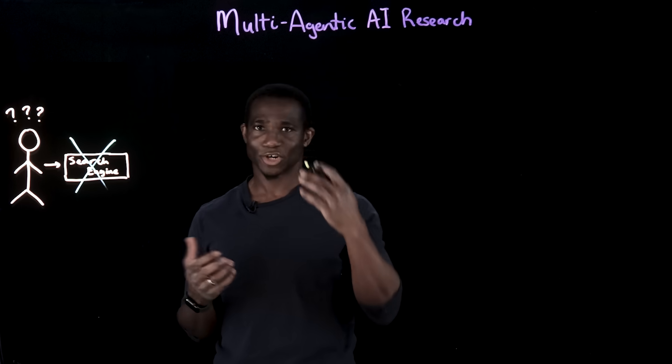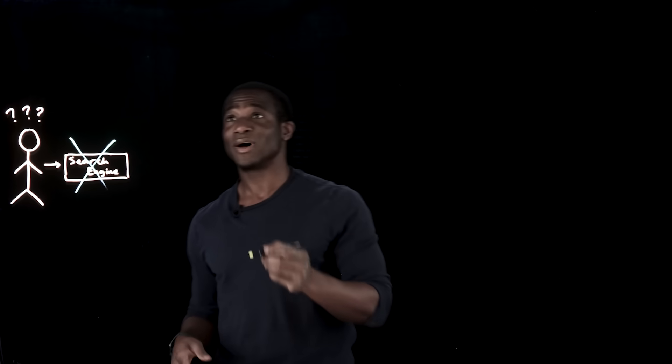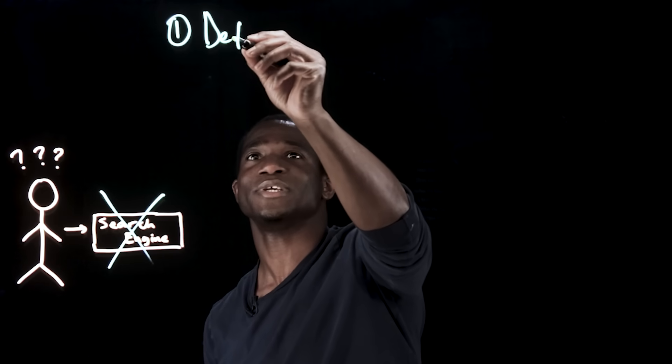But what is this research process? Well, in general, it follows these five steps. Step one is to define the research objective.